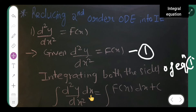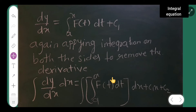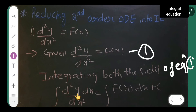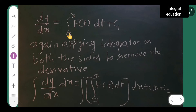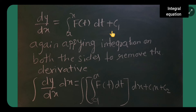The integral of the second derivative converts into the first derivative. So, dy by dx is equal to integral from a to x of f of t dt plus c1. This function is dependent on x, so the limit of integration goes from a to x, and you can take any other variable. We specify this constant as c1.